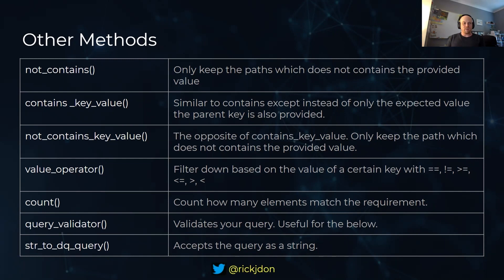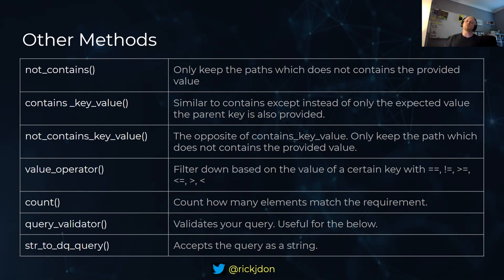There's also count, which does as it suggests. The last two are interesting as well - we've got the query_validator and string_to_key_query. The query_validator allows you to take your query as a string and validate it. If you use a method like not_contains with a bad value, it returns false; if the method is valid, it returns true. Coupled with string_to_key_query, you can pass your query in as a string, which is really useful because you could parse it in through other mechanisms - like a chatbot or via some kind of API.